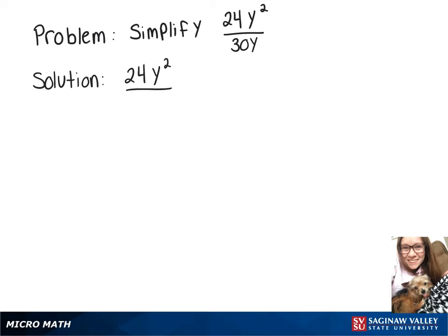So thinking about common factors between 24 and 30, the greatest common factor would be 6.